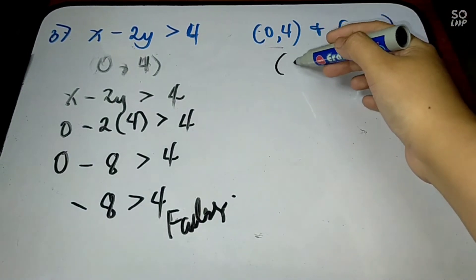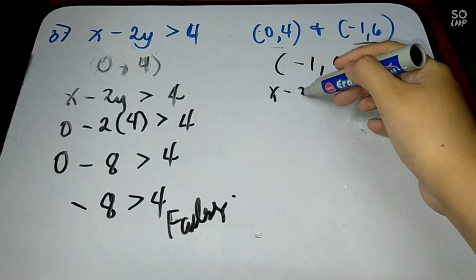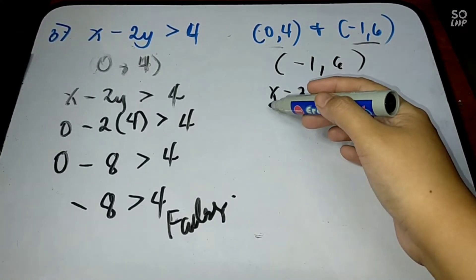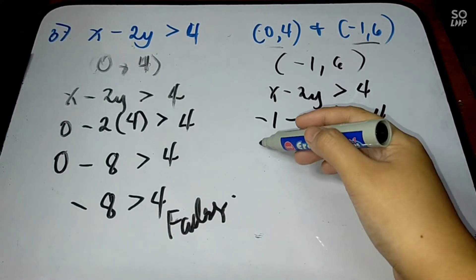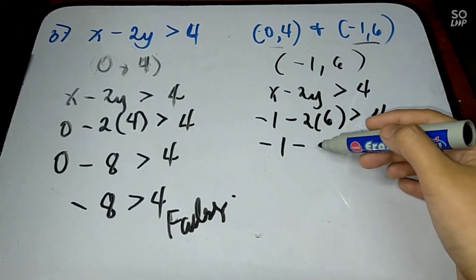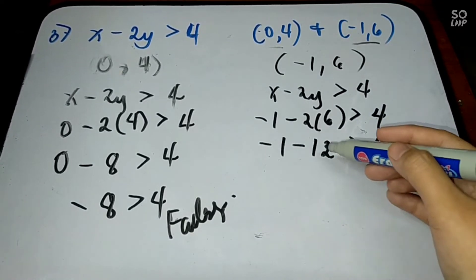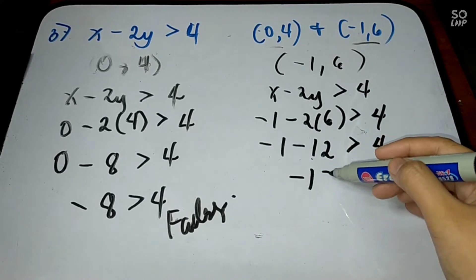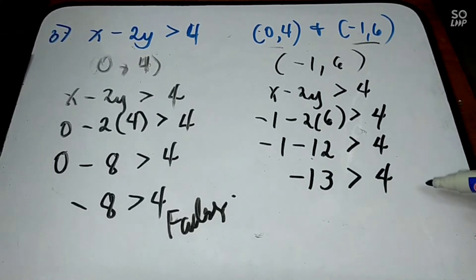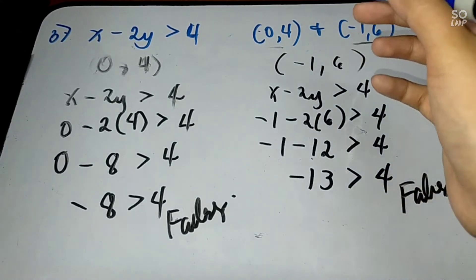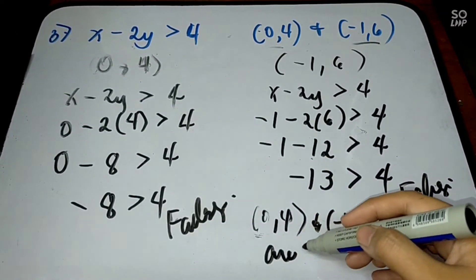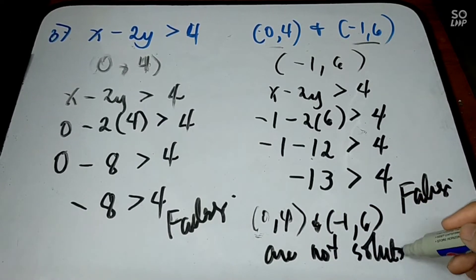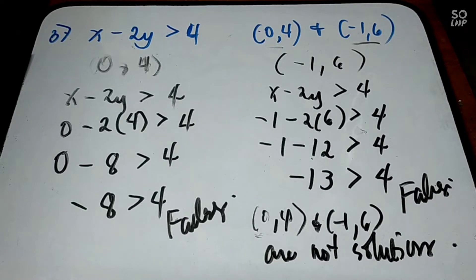For (-1, 6): x minus 2y greater than 4 — change x into negative 1 minus 2 times 6. Negative 2 times 6 equals negative 12, so negative 1 minus 12 equals negative 13, greater than 4. Does negative 13 greater than 4? No, that is false. Therefore, (0, 4) and (-1, 6) are not solutions. That is how we determine if given points are solutions or not of the given linear inequalities.